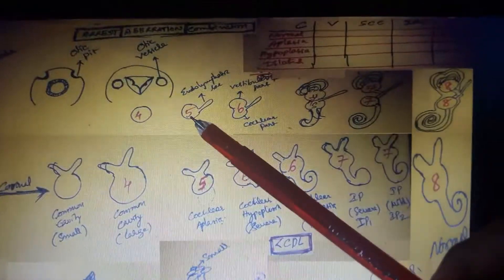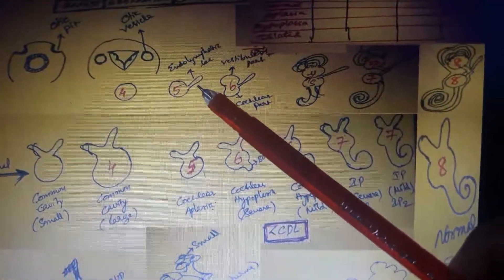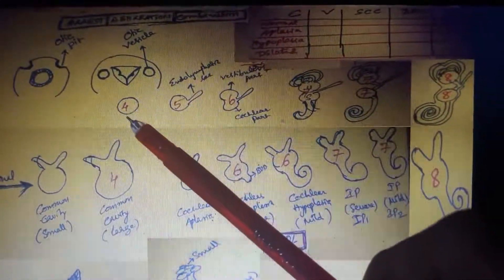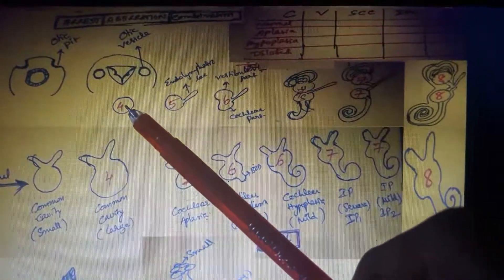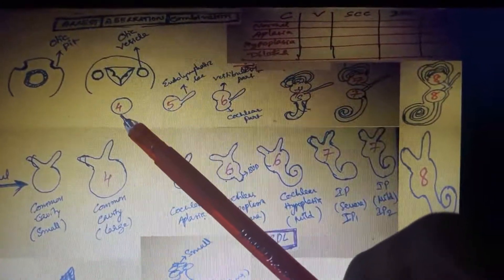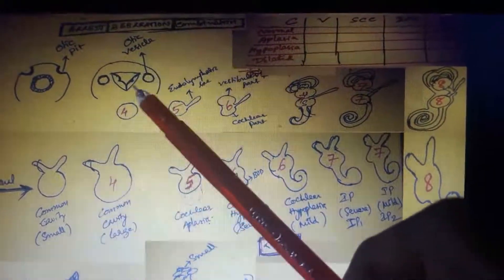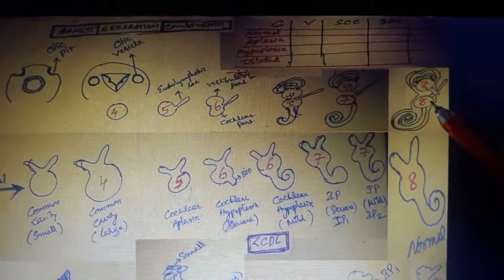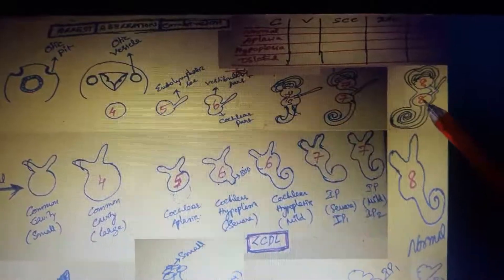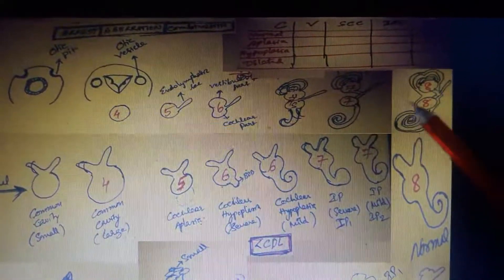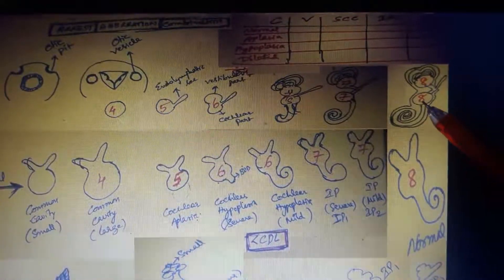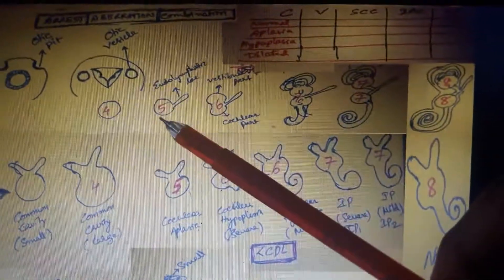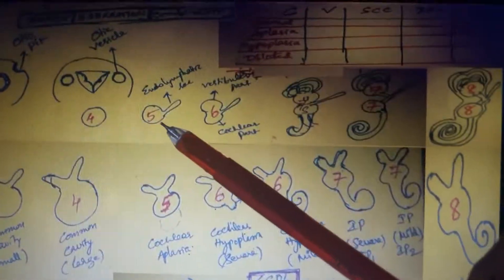From the otic vesicle, embryologically, a small protrusion emerges — that is the endolymphatic sac, at the fifth week. The otic vesicle is at the fourth week, that is the first month. By the eighth week — two months — the whole inner ear and cochlea develops and reaches adult size.